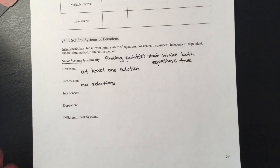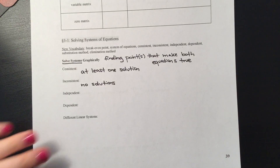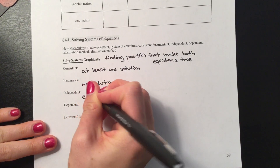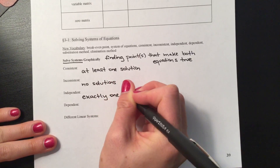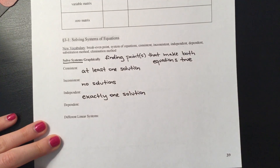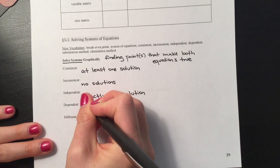It is possible that when we go to look for solutions, we don't actually find any at all. We'll talk about what exactly that means in the context of the two graphs. Independent means that there is exactly one solution — one and only one. And dependent means infinitely many solutions.